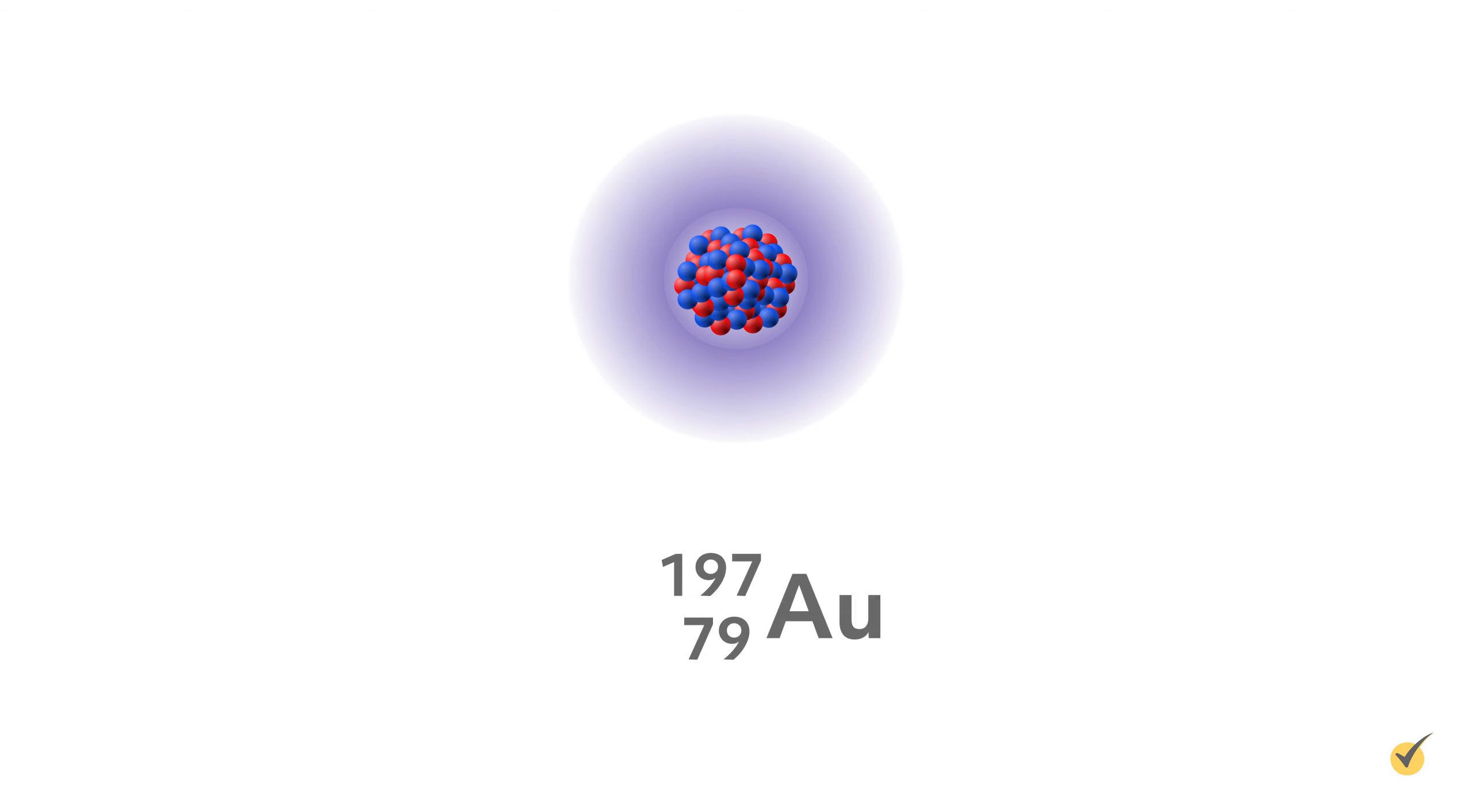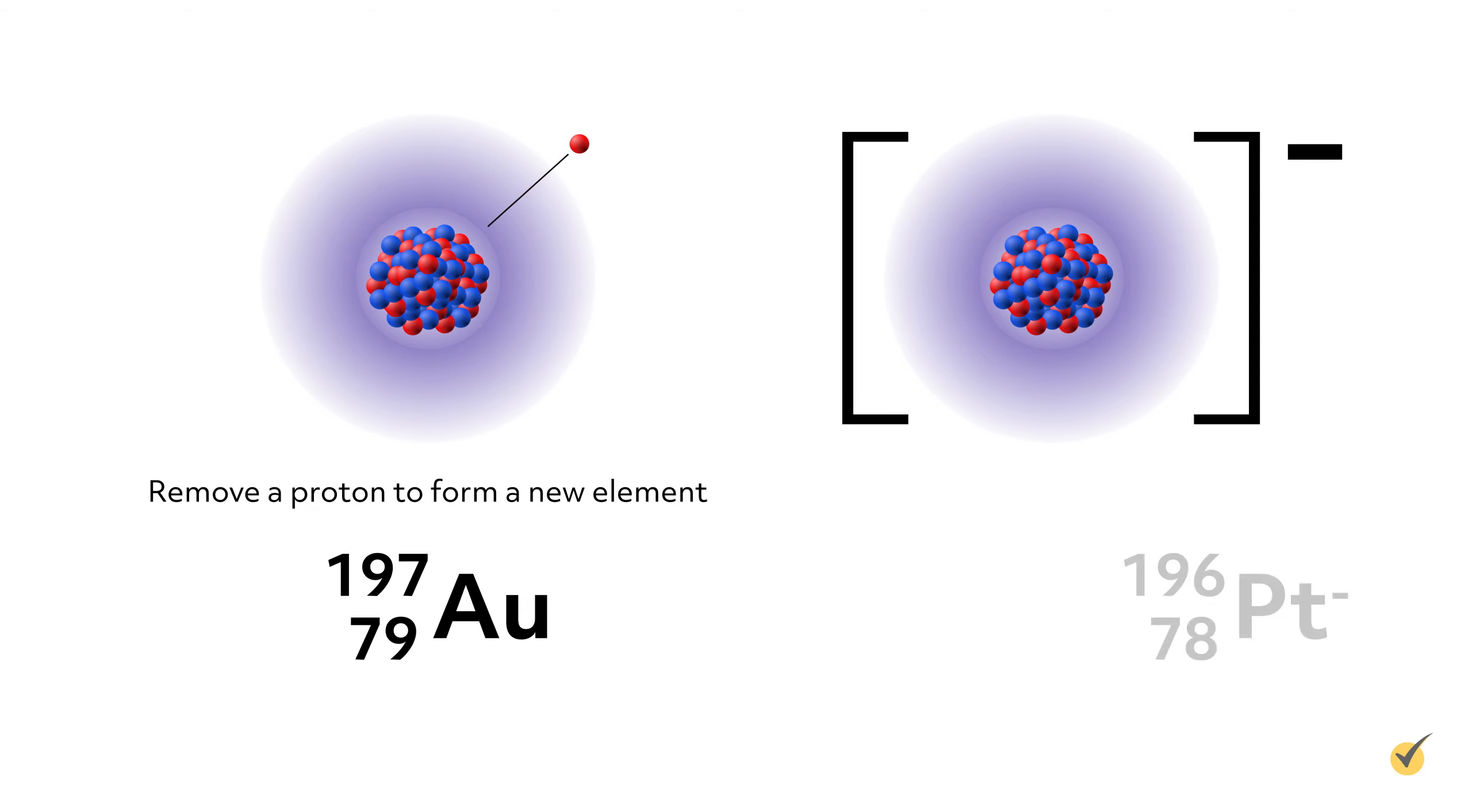In nuclear reactions, the nucleons are involved in the reaction and thus new elements and isotopes are formed in the process. So to accurately represent a nuclear reaction, we must include specific information about the nucleons in our notation.